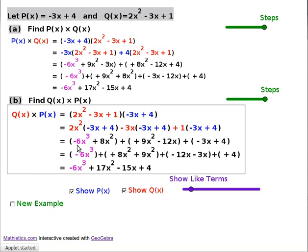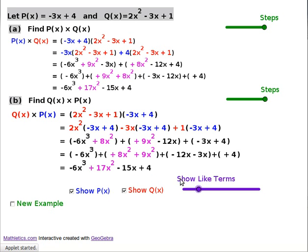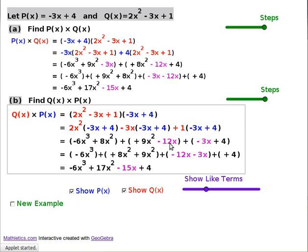You've got x cubed terms, you've got minus 6 of them, ends up with minus 6. X squared terms, you've got plus 8, plus 9, write them together, you end up with 17. Plain x terms, you've got minus 12 here, minus 3 here, ends up with minus 15.